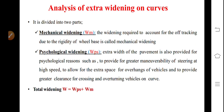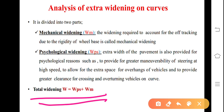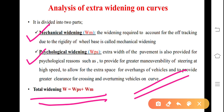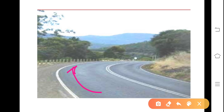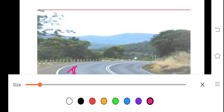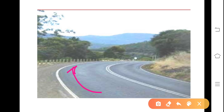The total extra widening W equals Wps (psychological) plus Wm (mechanical). When moving along a sharp curve, drivers occupy the outer edge of the pavement for better and quicker visibility of oncoming vehicles. Psychological widening is given by an empirical formula by IRC.